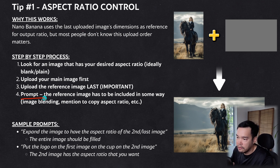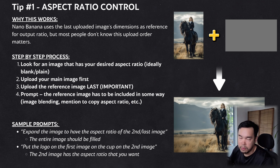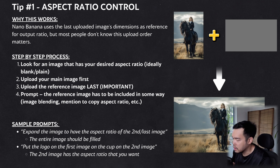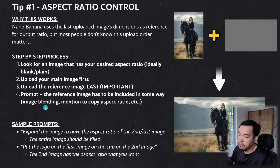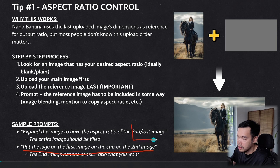Finally, you have to prompt correctly. The reference image has to be mentioned in some way — whether you ask Nano Banana to blend the images or to copy the aspect ratio of the last image. Simply uploading two images and asking it to expand the aspect ratio doesn't work without referencing the second image. You can say 'expand the image to have the aspect ratio of the second image' or 'put the logo from the first image on the cup in the second image.' As long as the second image has your desired aspect ratio, you're set.